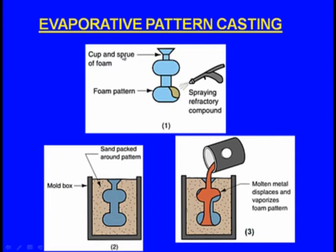Here we have made a cup and sprue made up of foam. This whole thing is the foam pattern. A refractory slurry is spread around this pattern repeatedly so that a moderately thick shell is created around this foam pattern.